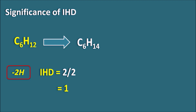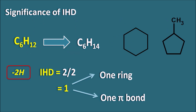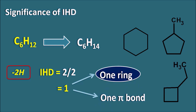The compound with molecular formula C6H12 has an IHD value of 1. This indicates that the compound is either having one cyclic ring or it is having one pi bond. Just by observing the molecular formula, we can draw many structures. For example, this molecular formula corresponds to cyclohexane, which is C6H12. Similarly, it also corresponds to methylcyclopentane, or it may be ethylcyclobutane. In all of these compounds, one point is common: all these structures are having one ring, so they all have an IHD value of 1.